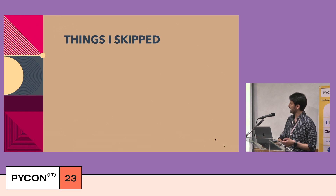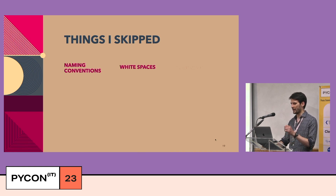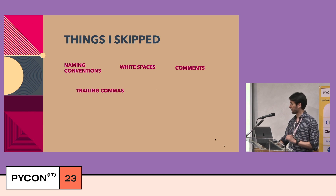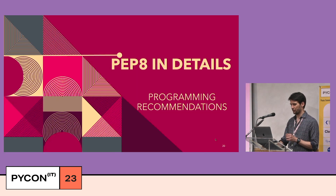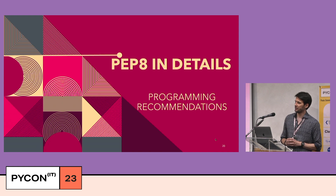Because I don't have a lot of time to cover everything related to code convention, things I skipped include naming conventions, white spaces, comments, trailing commas, and blank lines. Let's move to the second part, which is PEP8 in details — specifically programming recommendations.